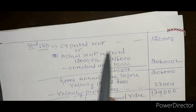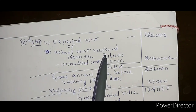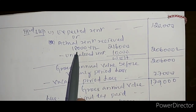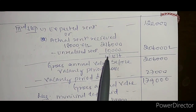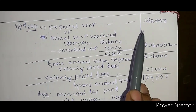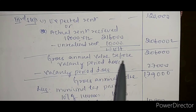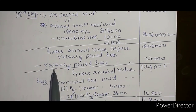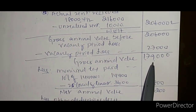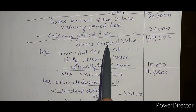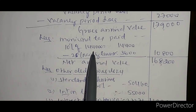Step 3: Expected rent of one lakh twenty thousand compared with actual rent received. Annual rent is one lakh eighty thousand into 12 equals two lakh sixteen thousand, minus unrealized rent of twenty six thousand, giving one lakh ninety thousand. Whichever is highest — one lakh ninety thousand is highest — that is gross annual value before vacancy period loss. Deduct vacancy period loss of twenty seven thousand, giving one lakh seventy nine thousand as gross annual value.